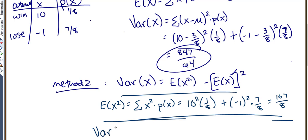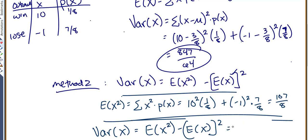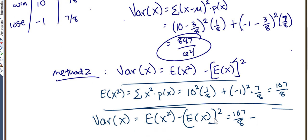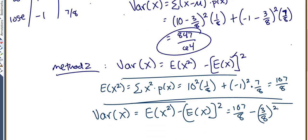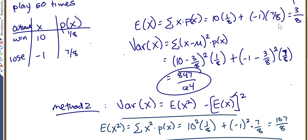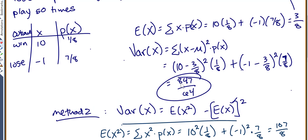Now we can find the variance of x. The variance equals the expected value of x² minus the expected value of x, all squared. So that's 107/8 minus (3/8)², which equals 847/64. Either way, you get the same variance. The second method is easier for more complicated problems with more outcomes. So our expected value is 3/8 and our variance is 847/64 — that's for playing one time.